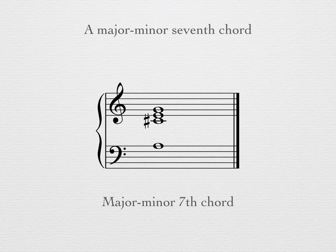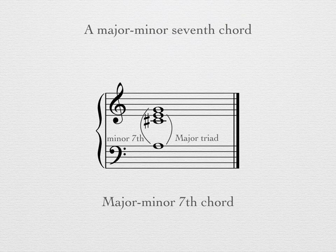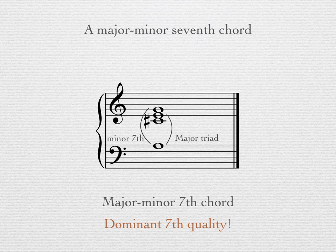The 7th chord we found in our analysis is spelled as an A major triad with a minor 7th above the root. This 7th chord quality should be familiar to you as a major-minor 7th, or dominant 7th quality. But what does it mean to have a dominant 7th chord that's not built on the dominant, or scale degree 5?